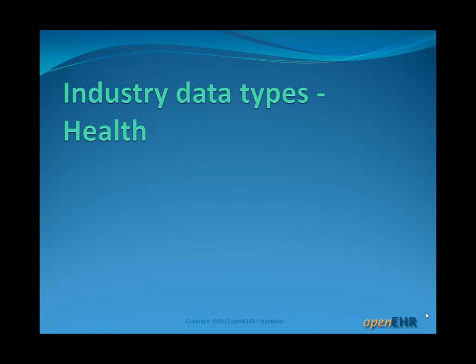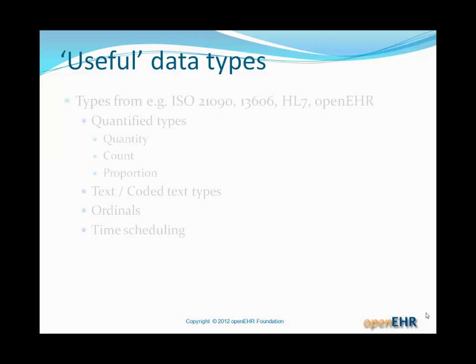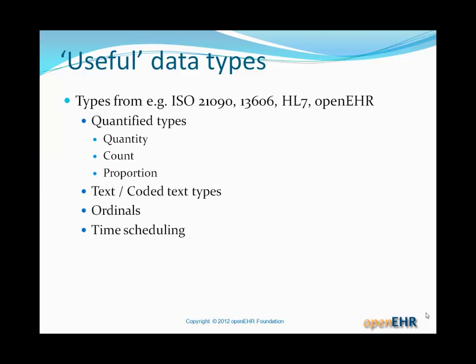Let's look at some industry data types. In health, we need what we might think of as useful data types. Not everything can easily be expressed in pure primitives. So very well-known examples, obviously extending to other industries as well. Quantified data types, so quantities with at least units, possibly things like accuracy and precision. Counts, proportions, and so on. Also text and coded data types. Ordinals, which is something that occurs very often in health. And time scheduling data types. I'm going to take a quick look at how some of these are efficiently constrained in ADL and AOM.